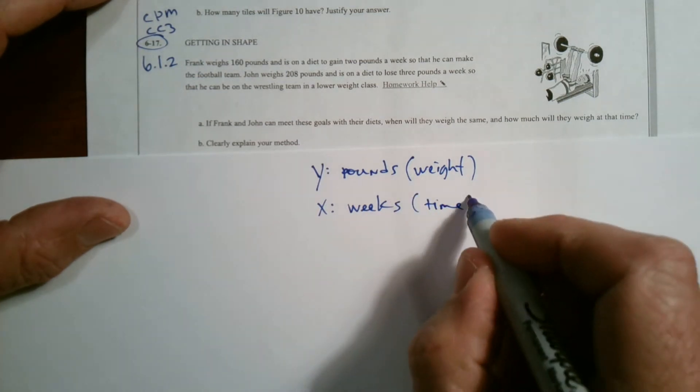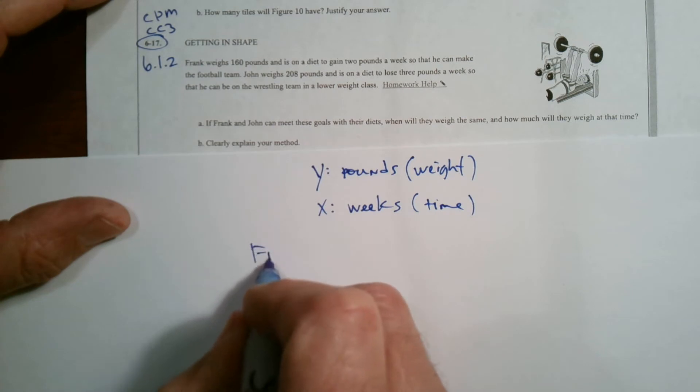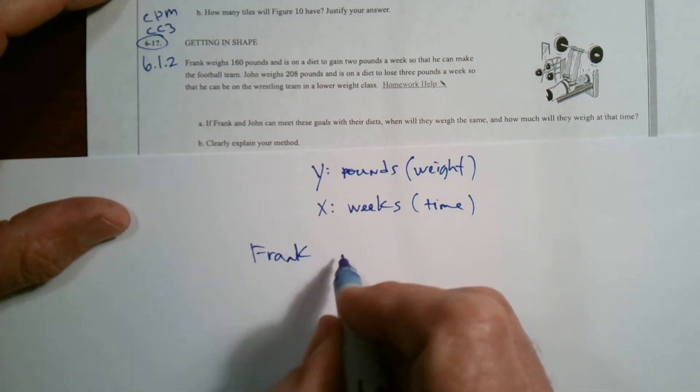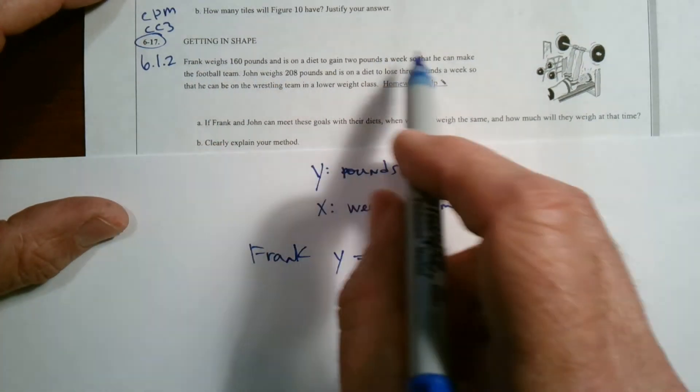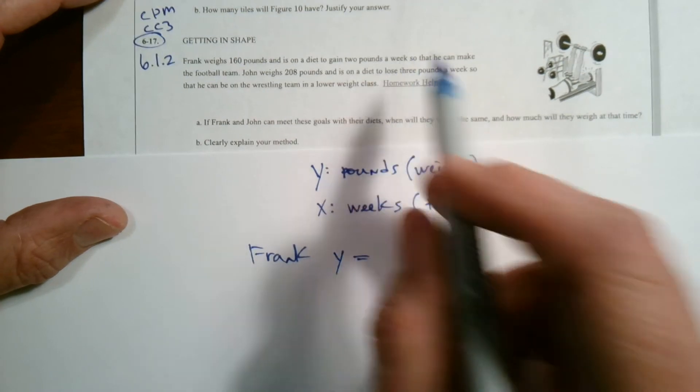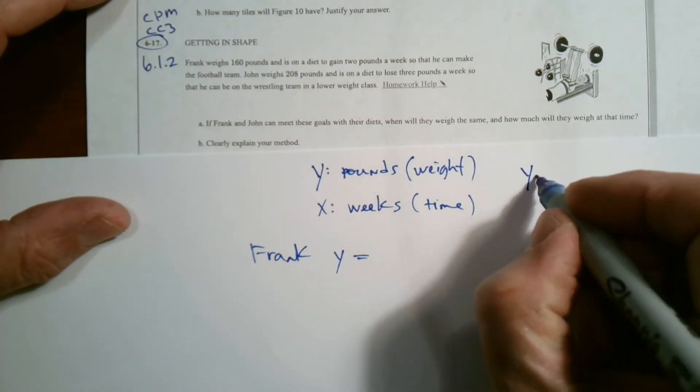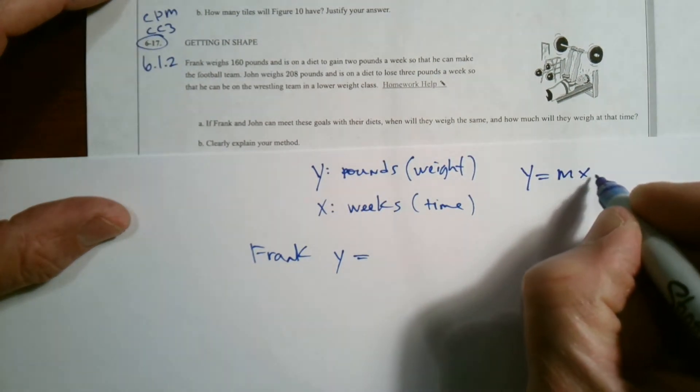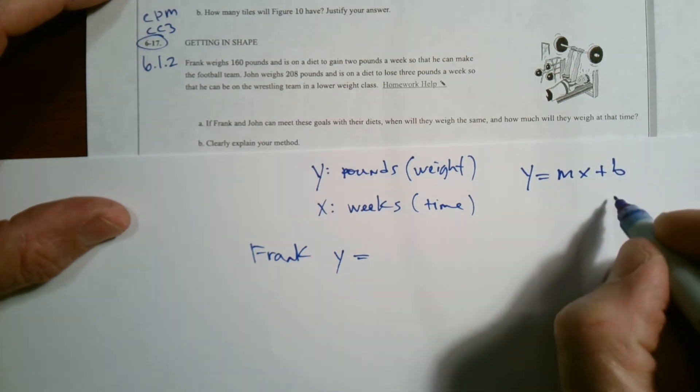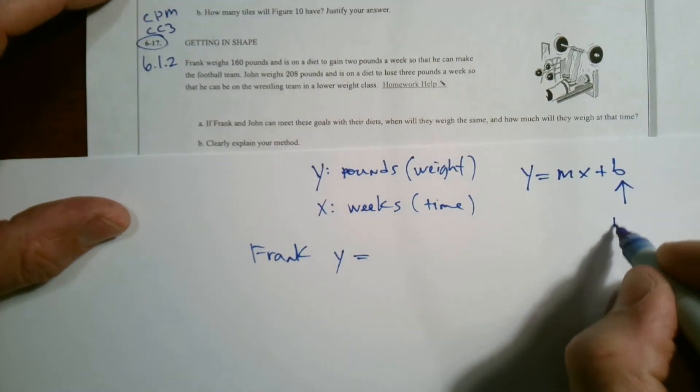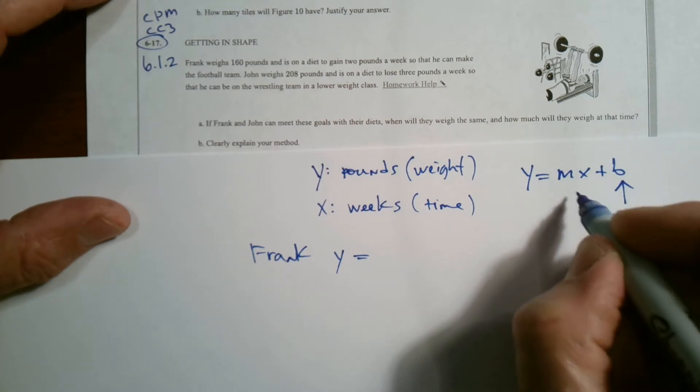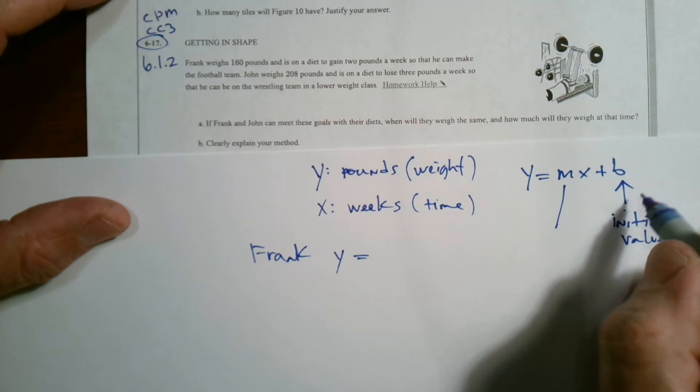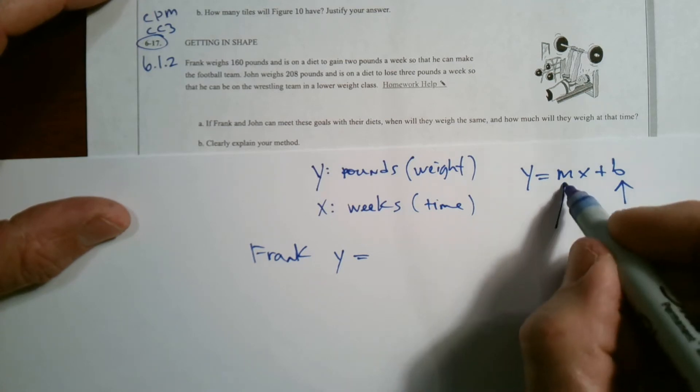And so let's write two equations. We have Frank. What do we know? Frank, we're going to say Y, his weight starts at 160 and is gaining two pounds a week. Well, remember the equation, Y equals MX plus B, that B is always the initial value, right? The starting value, or we know as a Y intercept, but that's that initial value.